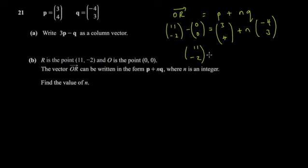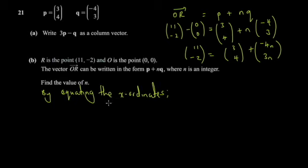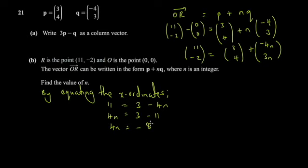Expanding: (3, 4) plus n(-4, 3) gives (3 - 4n, 4 + 3n). Equating the x-ordinates: 11 = 3 - 4n. Rearranging: 4n = 3 - 11, so 4n = -8.